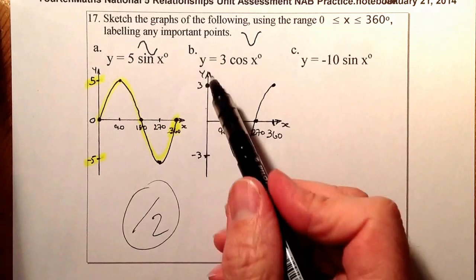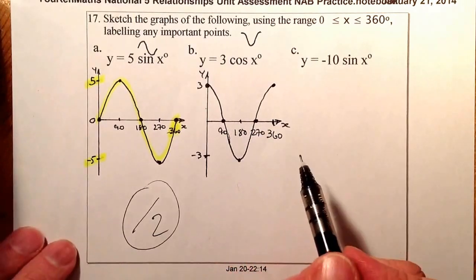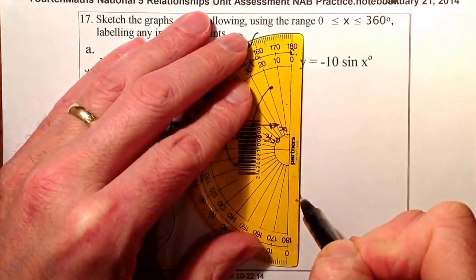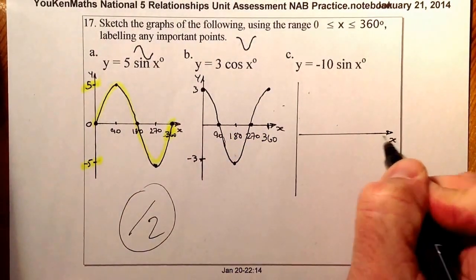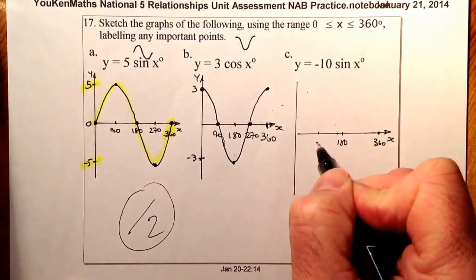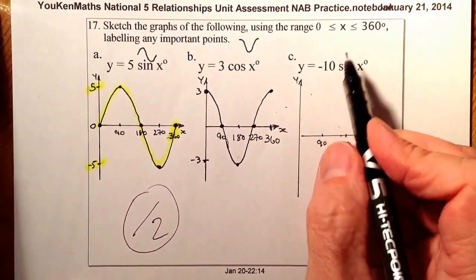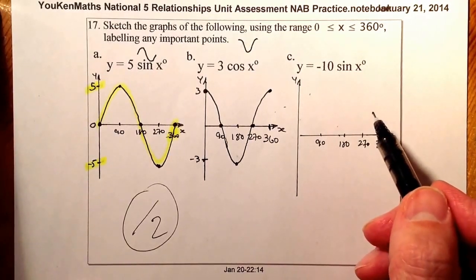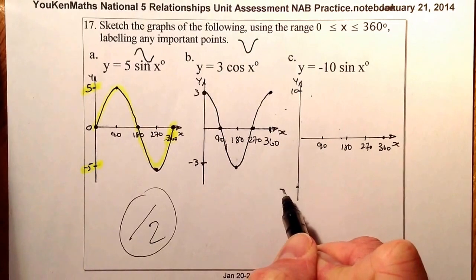The marks are for the amplitude and period — one mark — correct shape of graph and through the correct points — that gives the final marks, so two marks total. Now the final question of this type: it's a sine graph. I've set up the x-axis with 360, 180, 90, and 270 marked. On the y-axis, it's going to go up to 10 and down to minus 10.